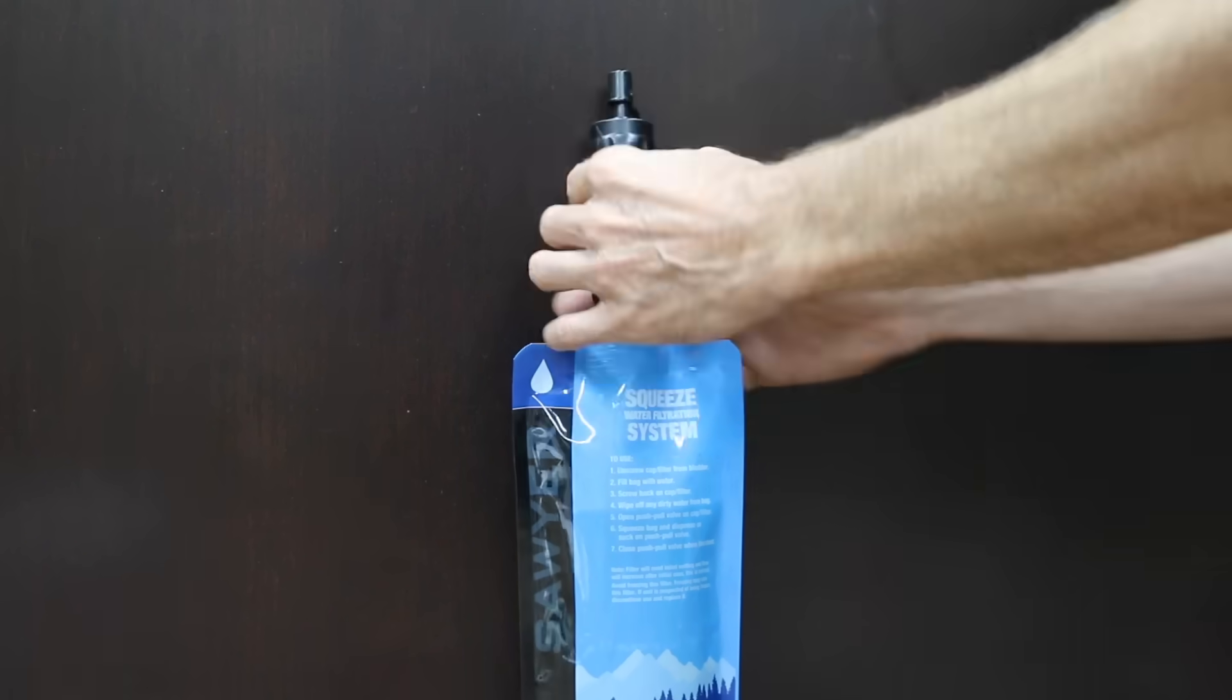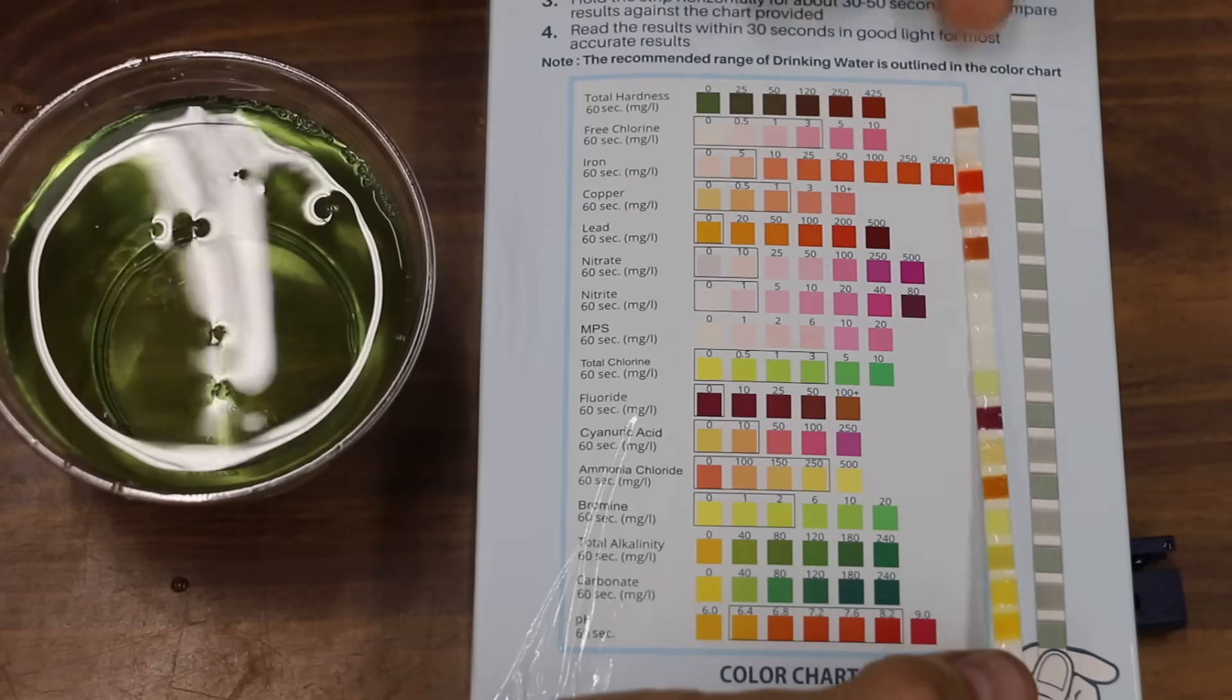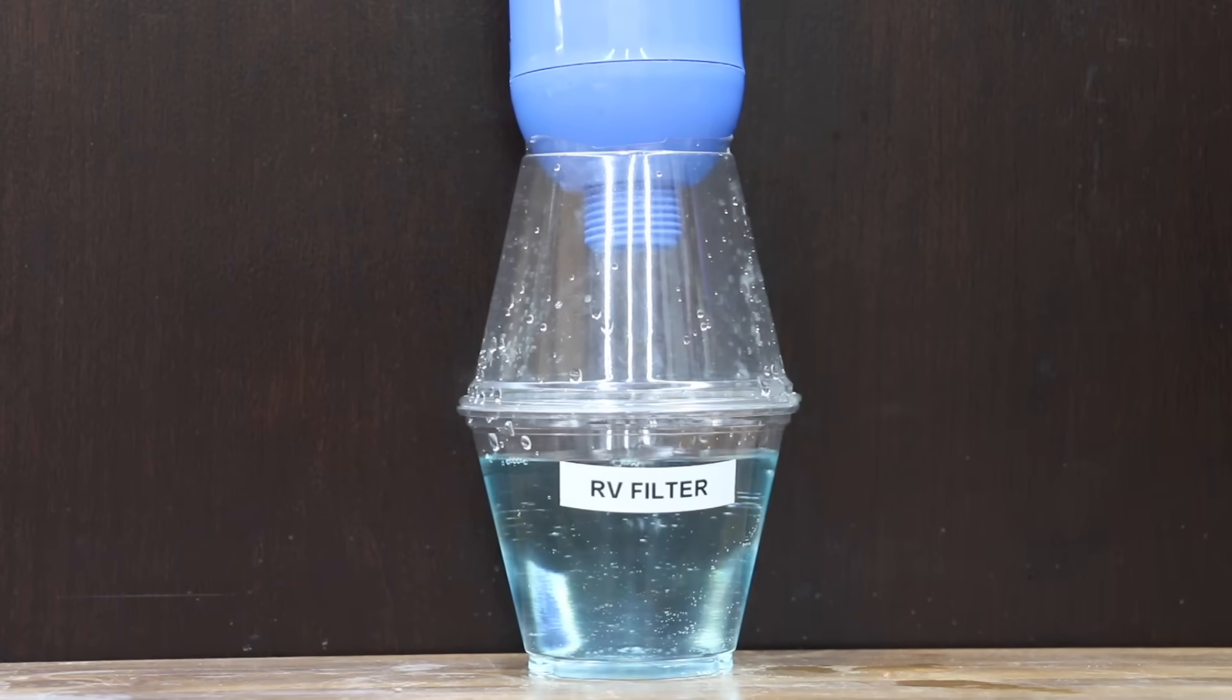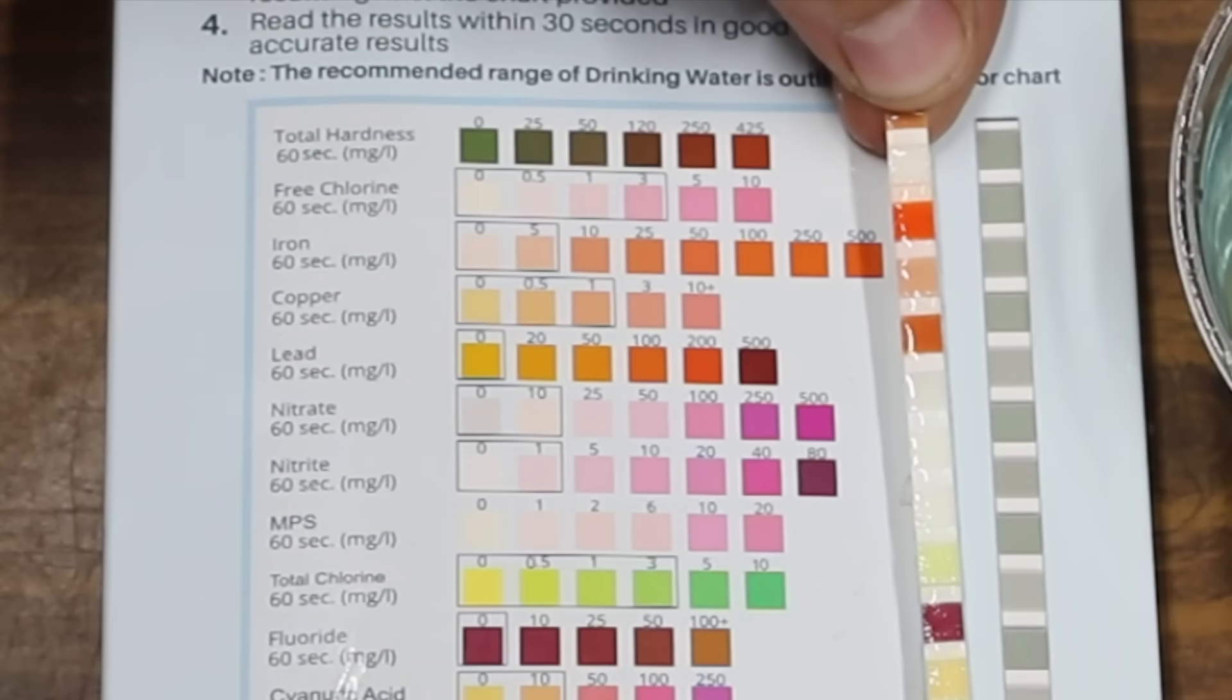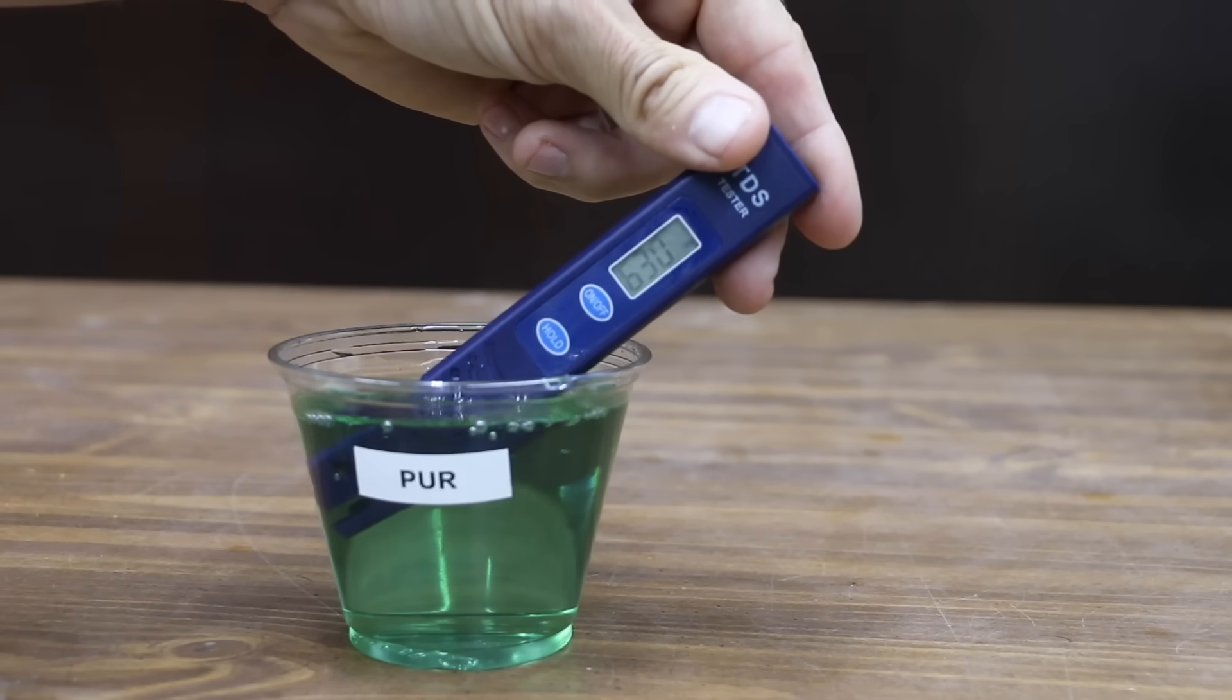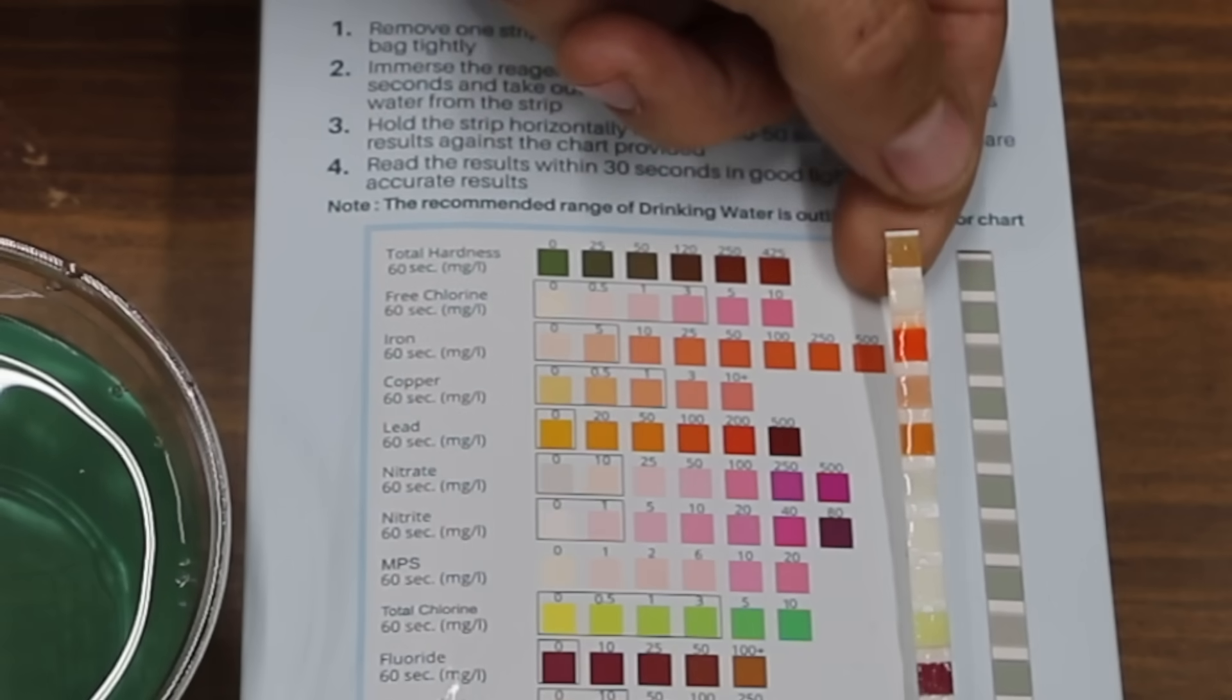Just like the Aquaphor, the Sawyer had about the same amount of dissolved solids at 576 parts per million. However, the test strip is showing that the Sawyer didn't do nearly as well as the Aquaphor at removing the iron. The RV filter didn't perform as well as the Aquaphor or Sawyer at 617 parts per million. Unfortunately, the water that passed through the RV filter still has quite a bit of iron left in it. While the Pure didn't cause the water color to change much, the water doesn't look nearly as murky. 630 parts per million. The Pure definitely seems to perform better than the RV filter at around 100 milligrams per liter for iron.